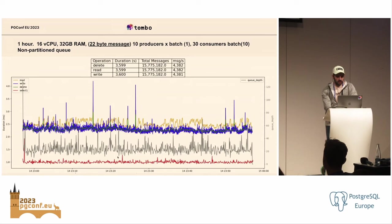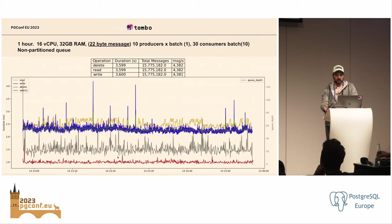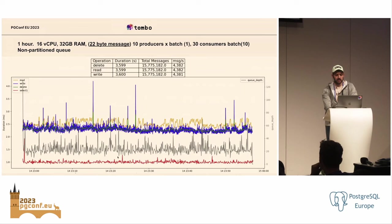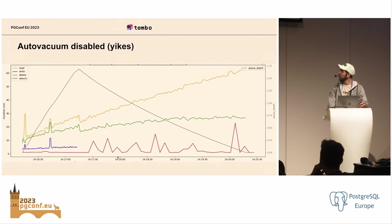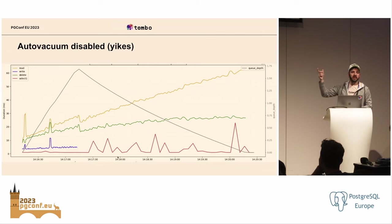In this benchmark we went back down to small message size — 22 bytes — but decreased the load: 10 producers producing one message at a time and 30 consumers consuming 10 messages at a time. Everything was very steady at about 2.5 milliseconds. This is also a one-hour benchmark, but under 5,000 messages per second. Then the bad case: we disabled auto vacuum and said just don't do it — what happens? This is what most people are afraid of when they think about a queue on Postgres. If you disable auto vacuum, it's going to be pretty bad.